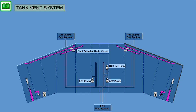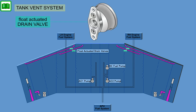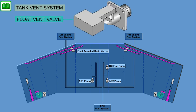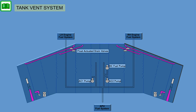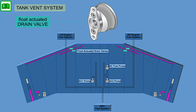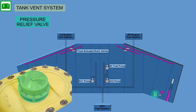The system also includes a wing main vent line with a float-actuated drain valve and an outboard vent line with float vent valve. In addition, a secondary or wing stub vent line with a float-actuated drain valve is fitted to each tank. As a safety against over-pressure, a pressure relief valve is mounted into each wing tank.